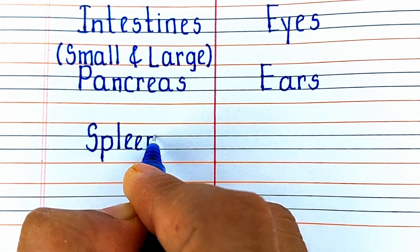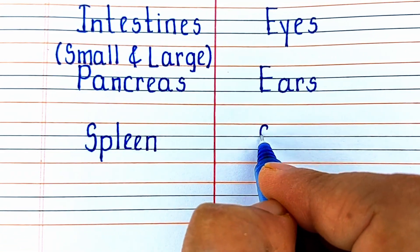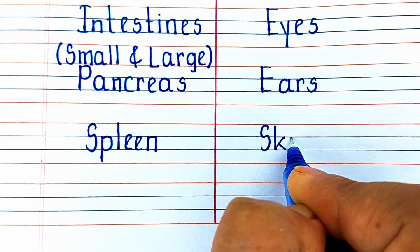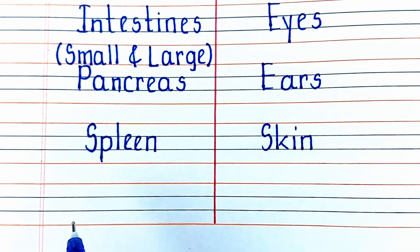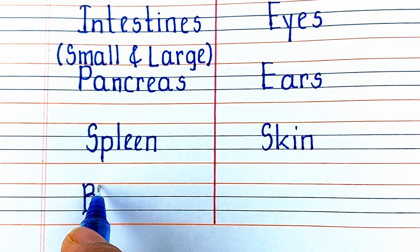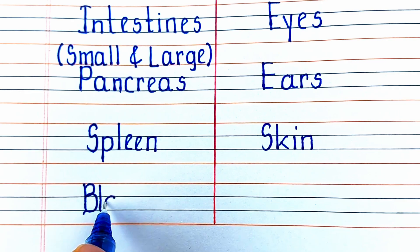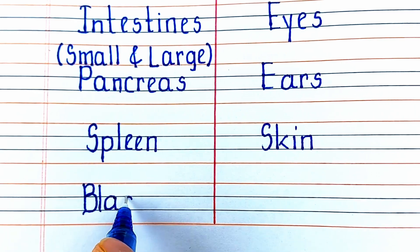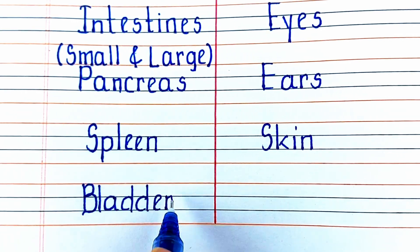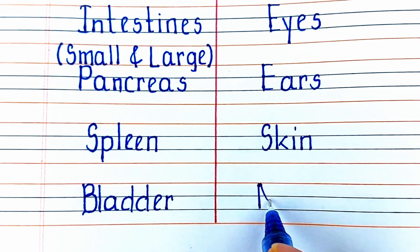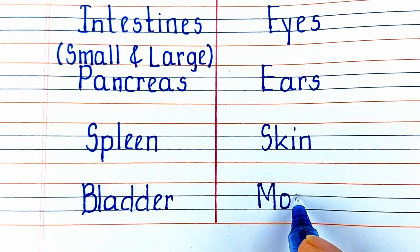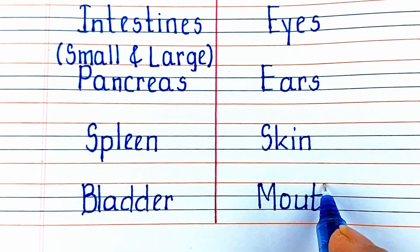The next internal organ in our list is the spleen. The next external organ — and also the largest organ of our body — is the skin. The next internal organ is the bladder, and the next external organ is the mouth.